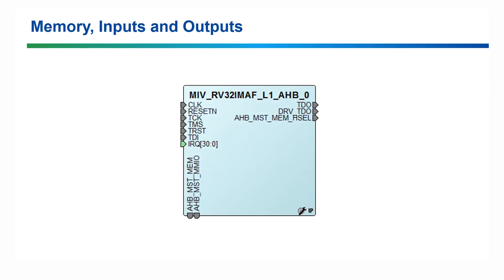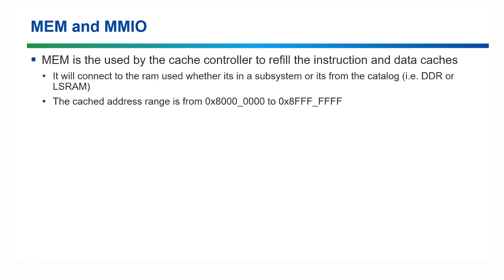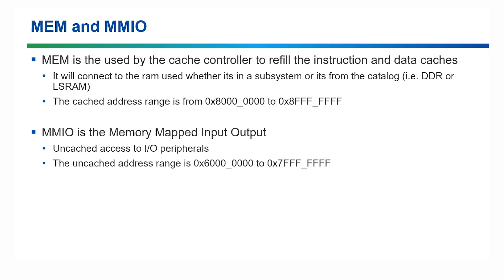Let's have a look at what the MEM and MMIO pins are actually for. The MEM is connected to the memory in the design — this could be DDR or SRAM for example. It's used by the cache controller to refill the instruction and data caches, which is the L1 cache we've already covered. The cached address range starts at 0x80000000. MMIO stands for memory mapped input output — basically a connection for IO peripherals such as GPIO and UART. The uncached address range starts at 0x60000000.